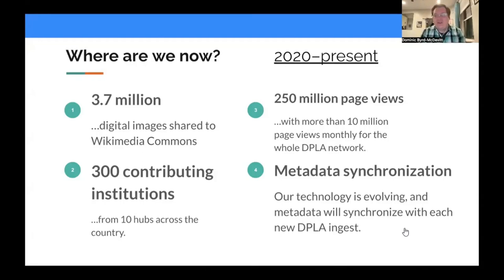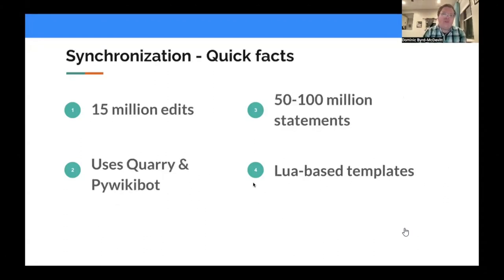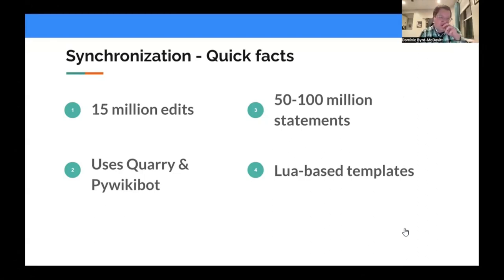As part of this, it's not just an upload project — we've actually developed technology for synchronizing continually over time the metadata for the files that we provide. This synchronization project makes use of structured data on Commons. In addition to those 3.7 million uploads, our bot account has actually made over 15 million other edits, because we're constantly adding new metadata and updating the existing structured data statements. That represents about 50 to 100 million structured data statements — it's kind of hard to tell because we're maxing out what the query service can actually handle.